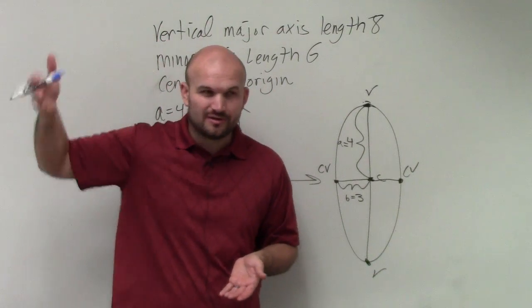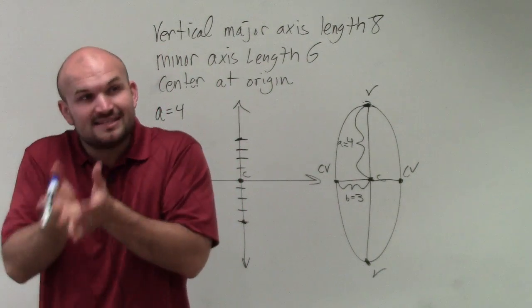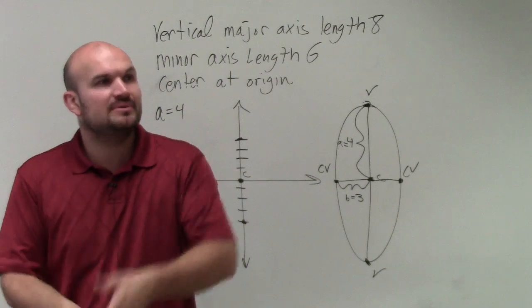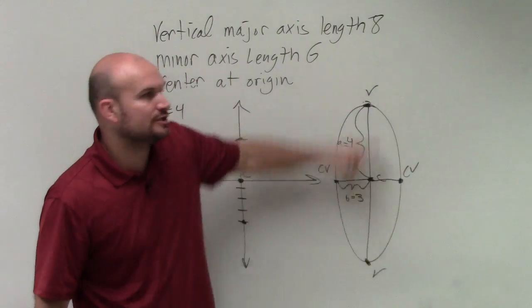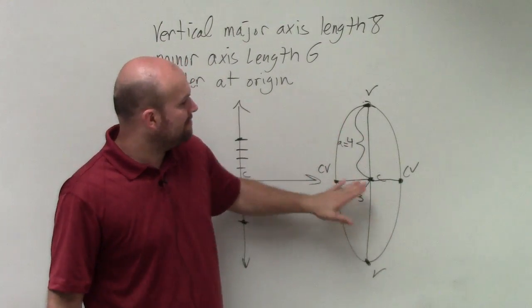We have the equation where we have a horizontal major axis or a vertical major axis. And rather than having to go back through your notes every single time, if you guys look at the vertical major axis, remember that a is always under y. Because a represents the longer major axis, right? So a is under y, b is under the x.